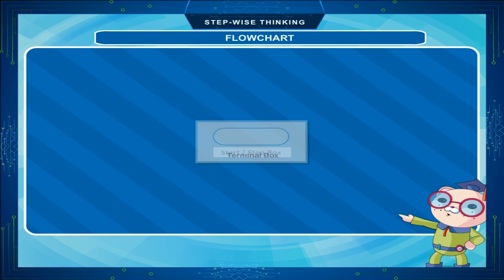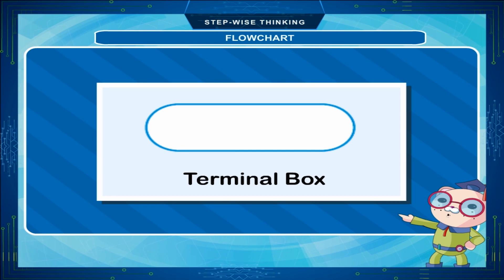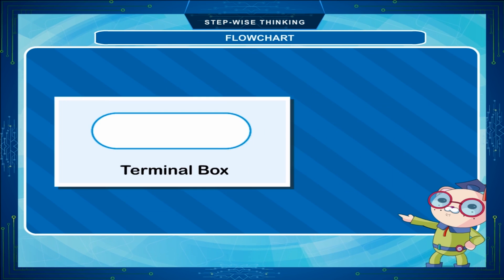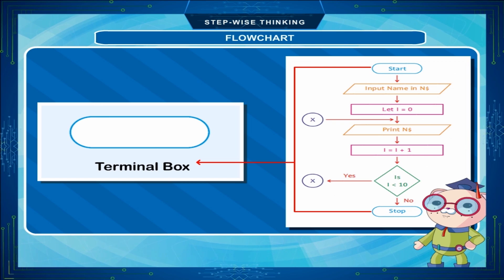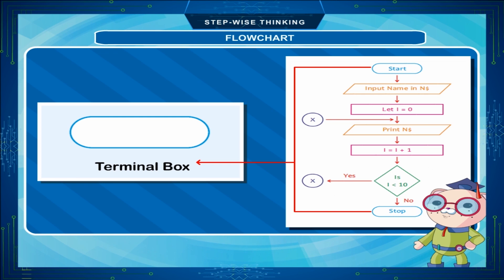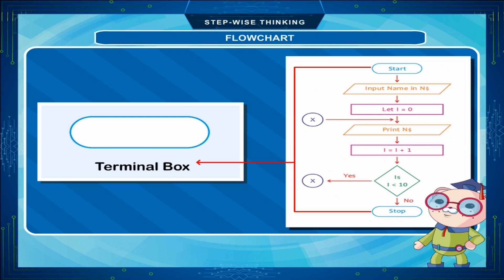Terminal box: The terminal box is the starting or ending point in a flowchart, so it is also called a start or stop box. This box is used at the beginning or at the end of any program. It is oval in shape, and while creating a flowchart, we write 'Start' or 'End' inside this oval.